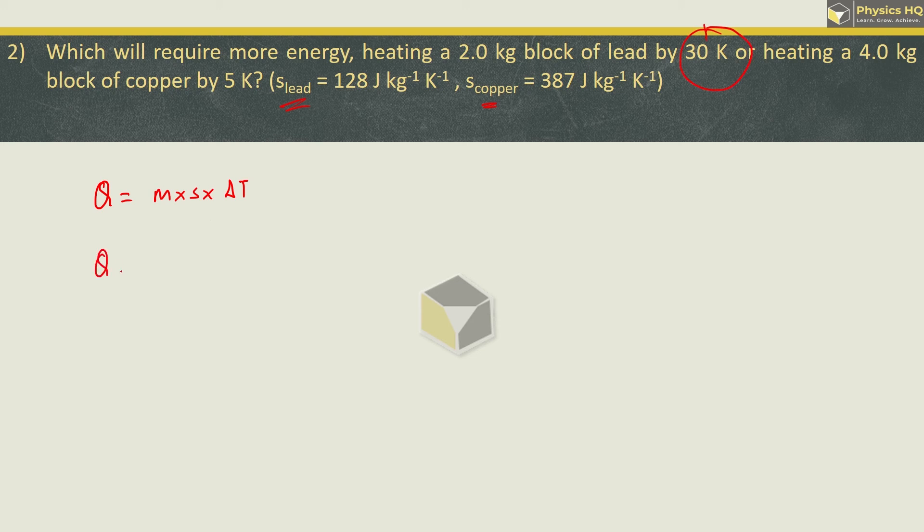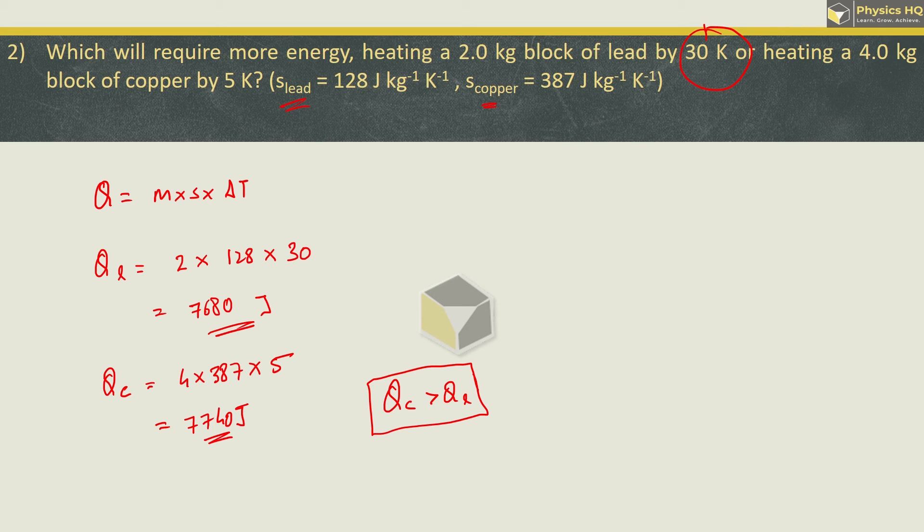This is equal to mass of lead which is 2 kg, specific heat capacity 128, and change in temperature is 30. This is the amount of energy required for lead. For copper, mass is 4, specific heat capacity is 387, and temperature increase by 5. So 5 times 4 is 20, 20 into 387 will give us 7740 Joule. Now we can see that the heat required for copper is more than the heat required for lead. This is our answer. Hope you all understood this.